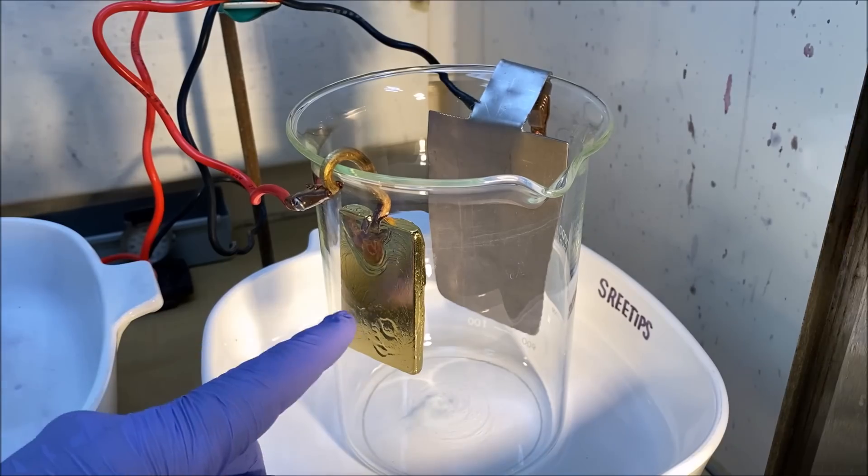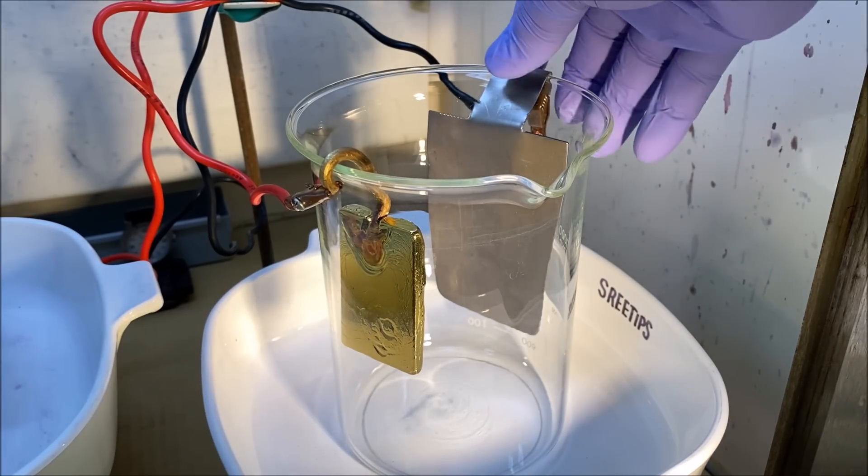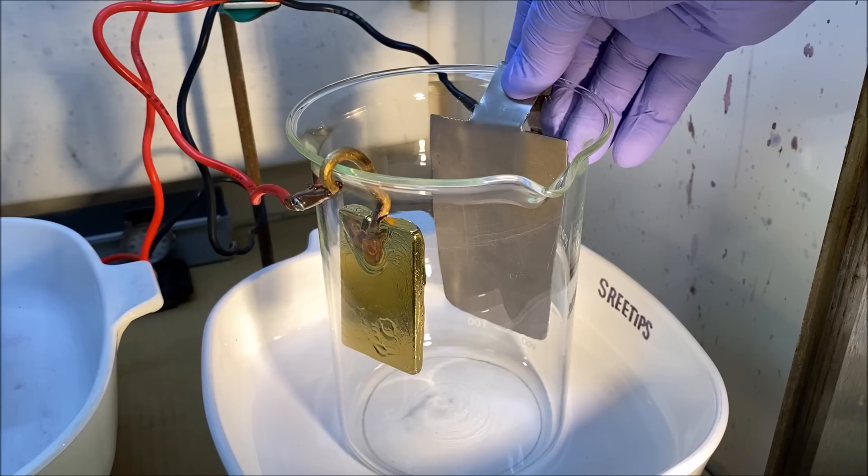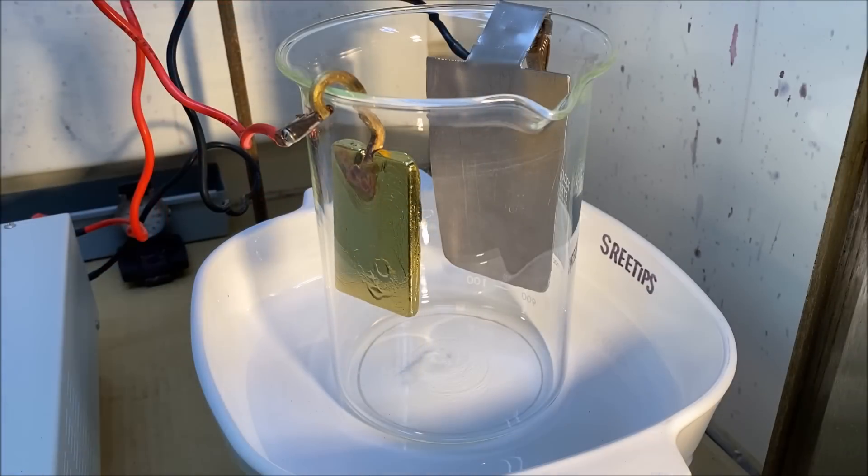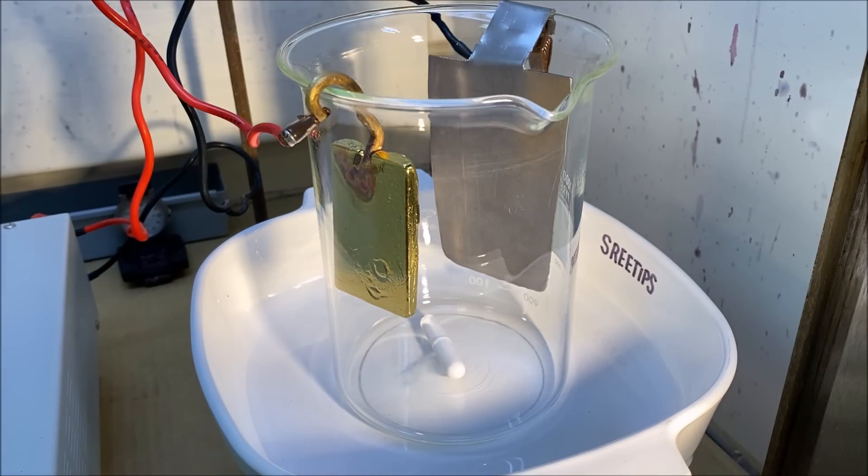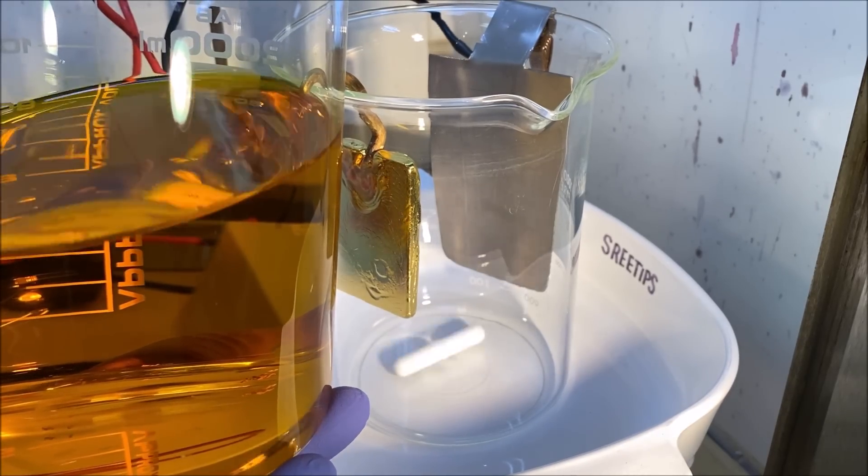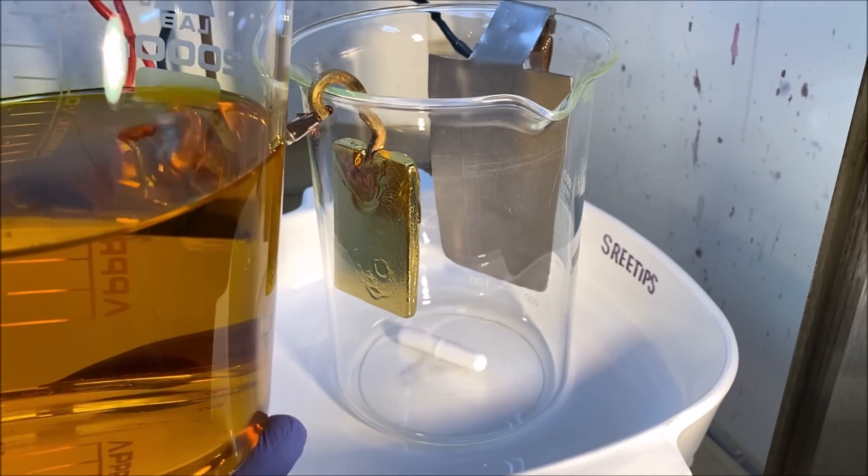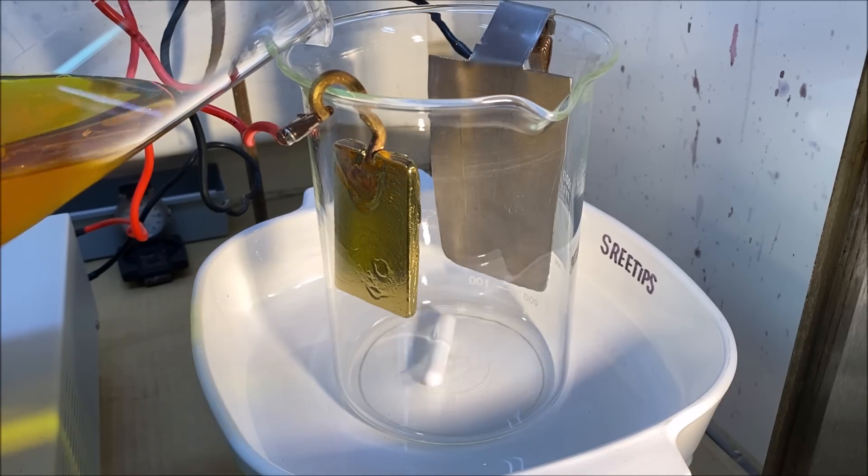I've got the anode bar connected to the positive side of the power supply and the titanium cathode connected to the negative side. Let's add a stir bar in here and make sure it's going to spin free. Now I'll add the electrolyte. This is the electrolyte from the pure gold that we dissolved with hydrochloric acid and hydrogen peroxide.